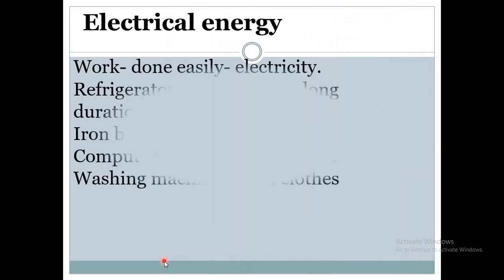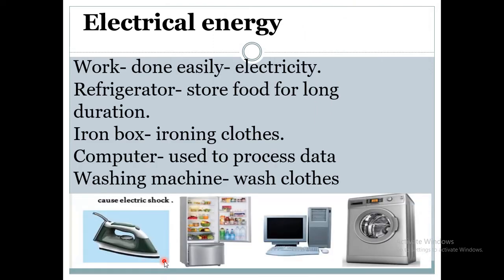Next is electrical energy. Our work is done easily with the help of electricity. A refrigerator works on electricity and is used to store food for a long duration. An iron box uses electrical energy to iron clothes. A computer is used to process data, and a washing machine is used to wash clothes — all our work is done easily with the help of electrical energy.